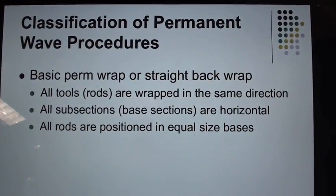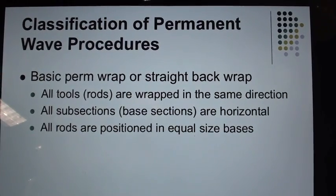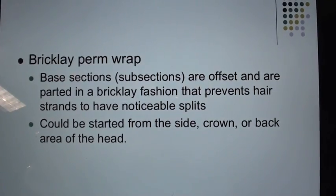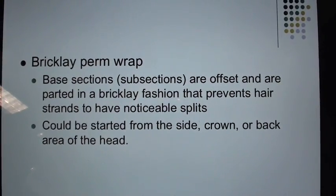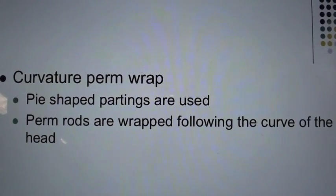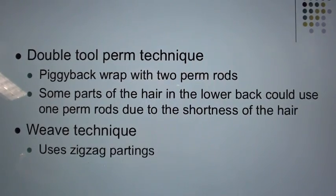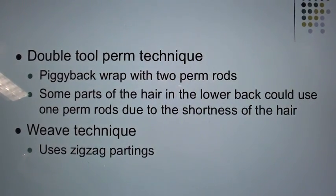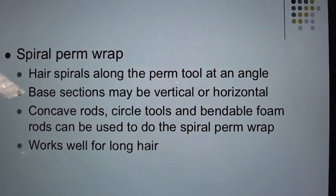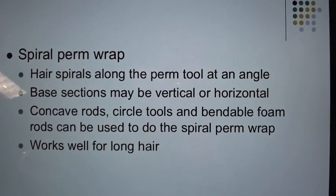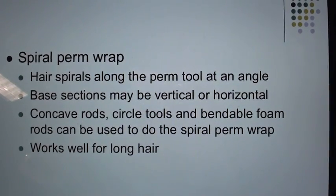Classification of permanent wave procedures: Basic/straight back wrap — all rods wrapped in the same direction, all base sections horizontal, all rods positioned in equal-size bases. Brickllay wrap — base sections are offset in a brick-lay fashion preventing noticeable splits; can be started from the side, crown, or back. Curvature perm wrap — pie-shape partings are used; rods are wrapped following the curve of the head. Double tool technique — piggyback wrap with two perm rods; some back areas may use one rod due to shorter hair. Weave technique uses zig-zag partings. Spiral perm wrap — hair spirals along the tool at an angle; base sections may be vertical or horizontal; concave rods, circle tools, and bendable foam rods can be used; works well for long hair.